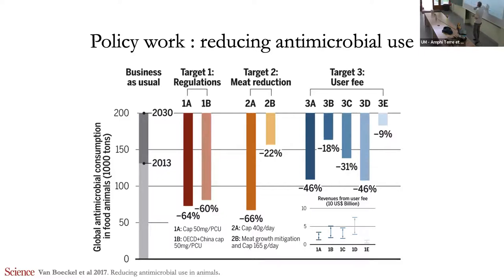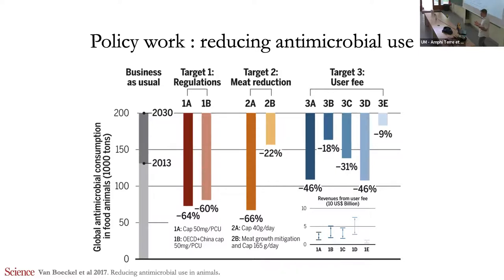The last policy we looked into is taxing veterinary antimicrobials. A 50% tax on antibiotics could reduce antibiotic use by 31%. The idea of a tax is twofold: first, it increases the price, making it less worthwhile for farmers to use antibiotics for small productivity gains; second, it generates money for the state, which could be reinvested in a global fund to support development of new drugs — developing a new antibiotic costs about one to two billion in R&D. This applies the 'polluter pays' principle, and we estimate this could generate between two and four billion dollars globally if implemented.